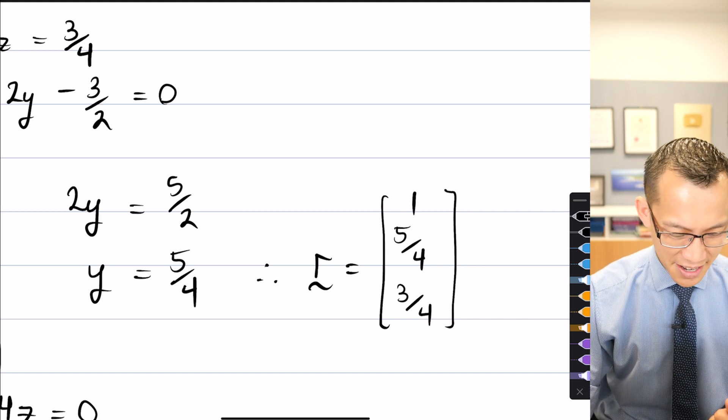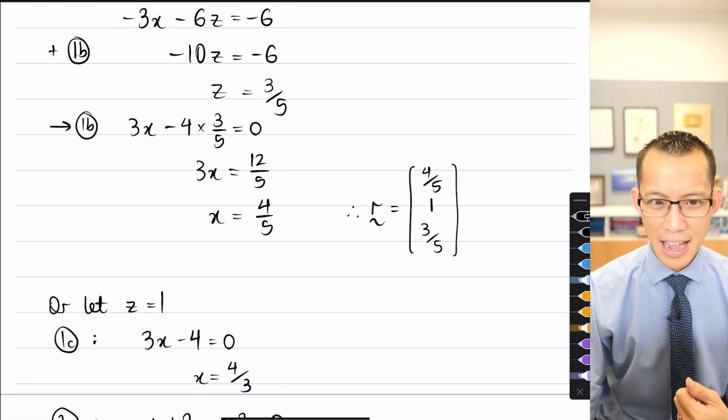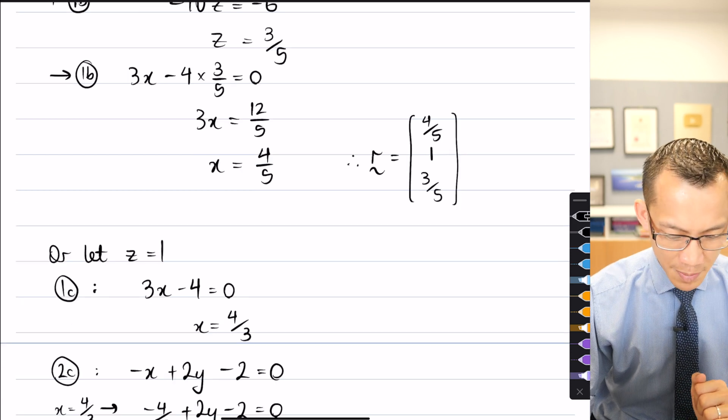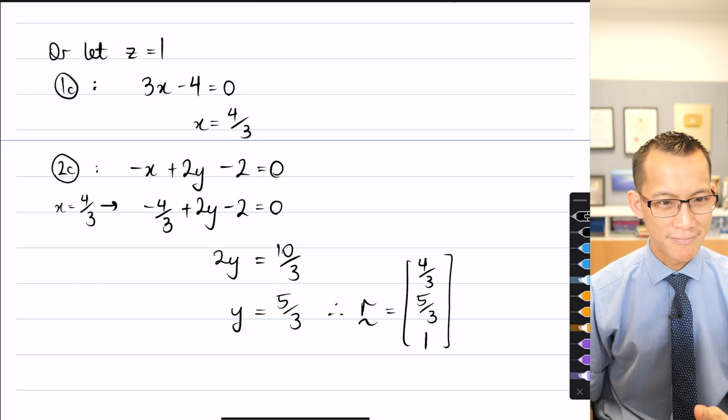Did that match? Yeah. Okay, fantastic. When I let Y equal 1, I got this instead. I got 4 fifths, and then 1, and then 3 fifths. Yeah? Yeah. Okay, and here's my last one. Z equals 1, I got 4 thirds, 5 thirds, and then 1, okay?